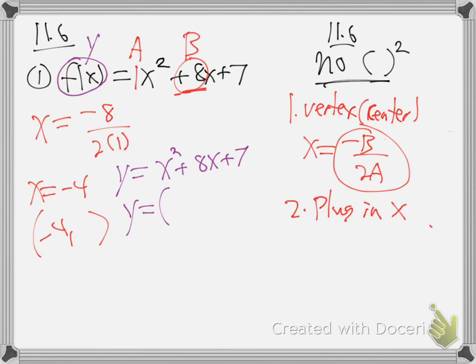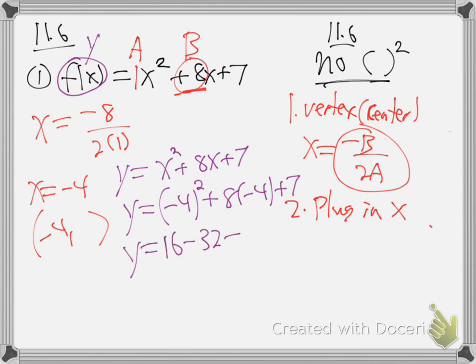So y equals - and plug in the x. Negative 4 squared plus 8 times negative 4 plus 7. y equals 16 minus 32 plus 7. y is minus 9. So there's the center - that's the center of the U shape.